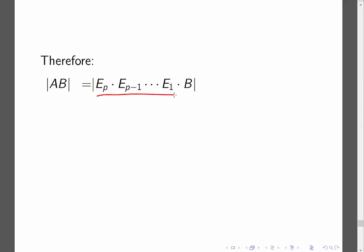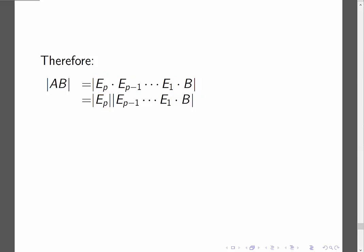In the second video, we showed that if you have an elementary matrix multiplied by some other matrix, you can separate the determinant. So I take out that first elementary matrix. That theorem says you can take out one elementary matrix — and if I can take out this one, I can take out the next one, and the next one, until I've taken out all of those elementary matrices multiplied by matrix B.